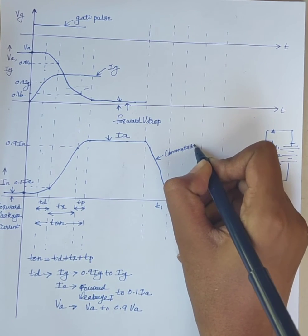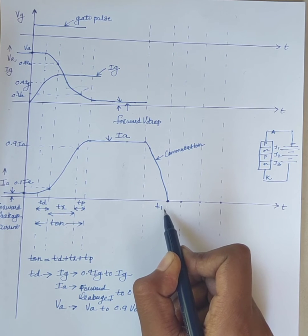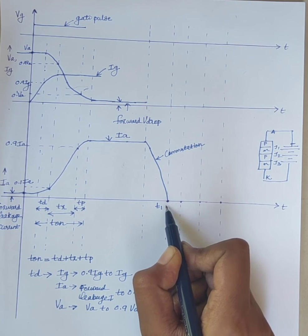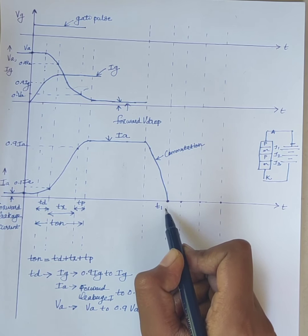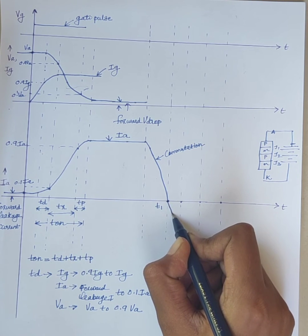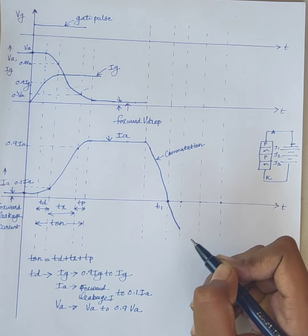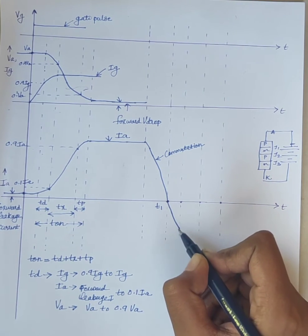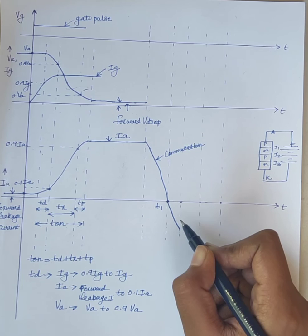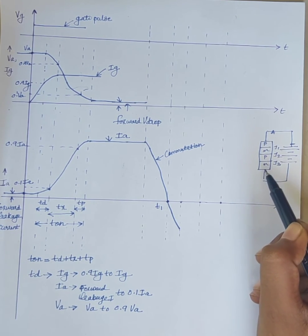So using suitable commutation method, we are turning off the SCR. At time T1, the anode current falls to zero and it will continue to increase in the reverse direction. This negative current will help to sweep out the charge carriers from the outer P and N layers.